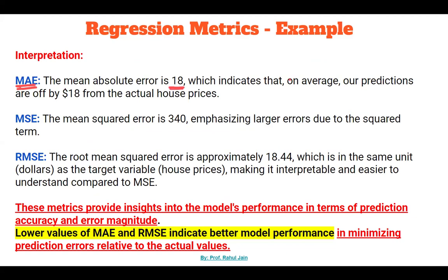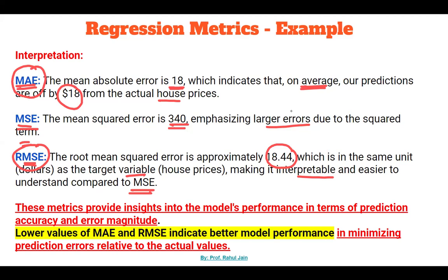To interpret these results: MAE = 18 indicates that on average, predictions fluctuate by $18 from actual values. MSE = 340 emphasizes larger errors due to the squaring term. RMSE ≈ 18.44 is in the same unit (dollars) as the target variable, making it more interpretable and easier to understand compared to MSE. Lower values of MAE and RMSE indicate that the model is performing well.